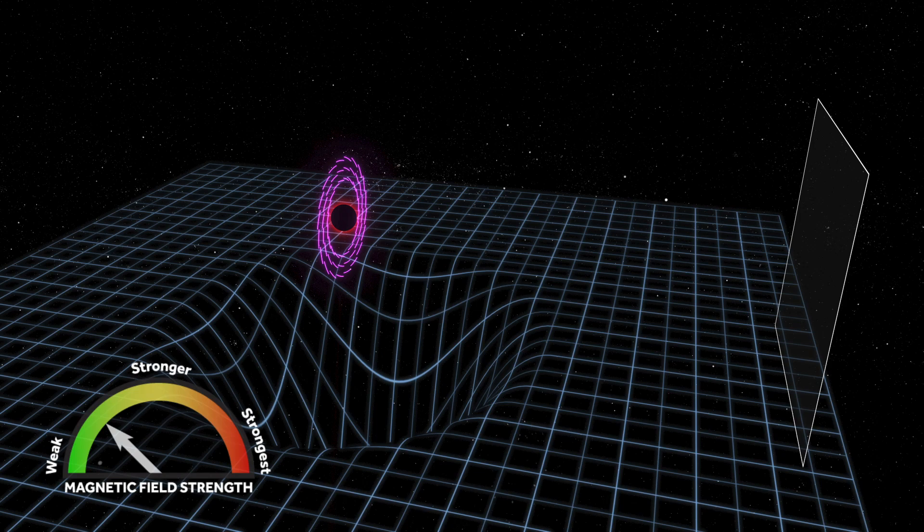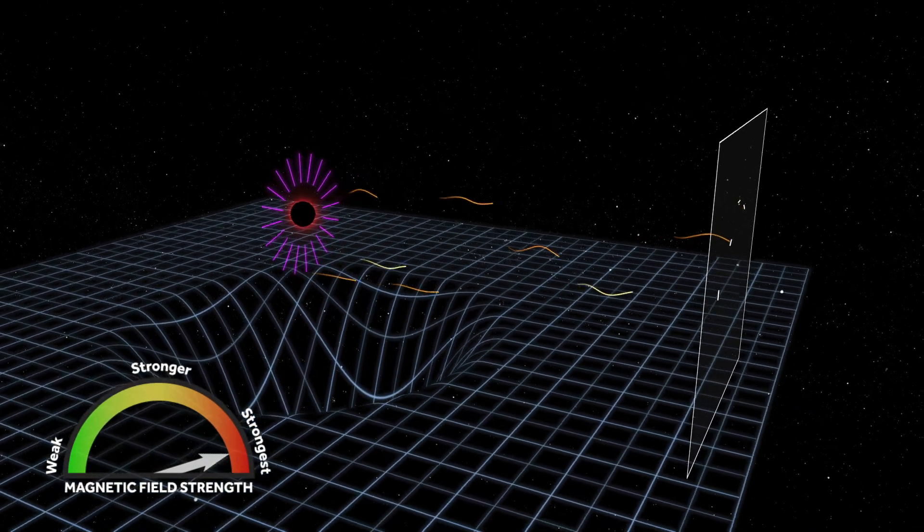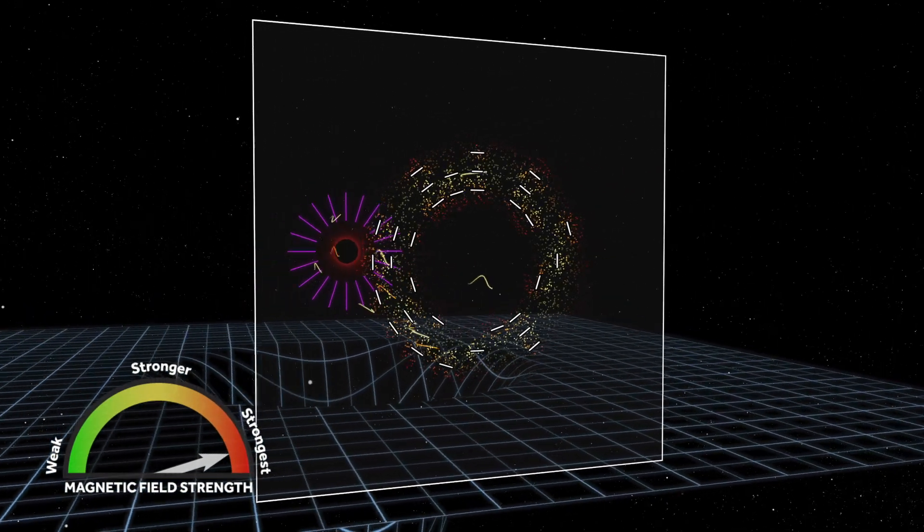On the other hand, extremely strong magnetic fields resist the plasma's motion and straighten out like spokes on a wheel. When we produce a black hole image, the polarized light waves now exhibit a different pattern.